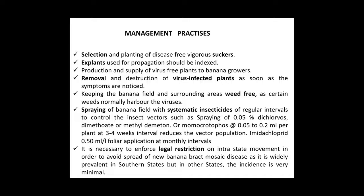Management Practices for banana aphid: selection and planting of disease-free vigorous suckers. Plants used for propagation should be indexed. Production and supply of virus-free plants to banana growers. Removal and destruction of virus-infected plants as soon as symptoms are noticed. Keep the banana field and surrounding areas weed-free, as certain weeds normally harbor viruses. Spray with systemic insecticides at regular intervals, such as 0.05% dichlorvos. Enforce legal restrictions on intrastate movement to avoid spread of banana bract mosaic disease, which is widely prevalent in southern states.